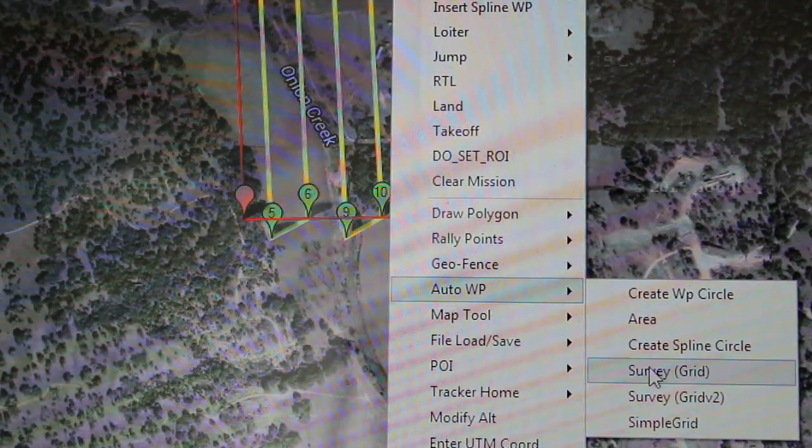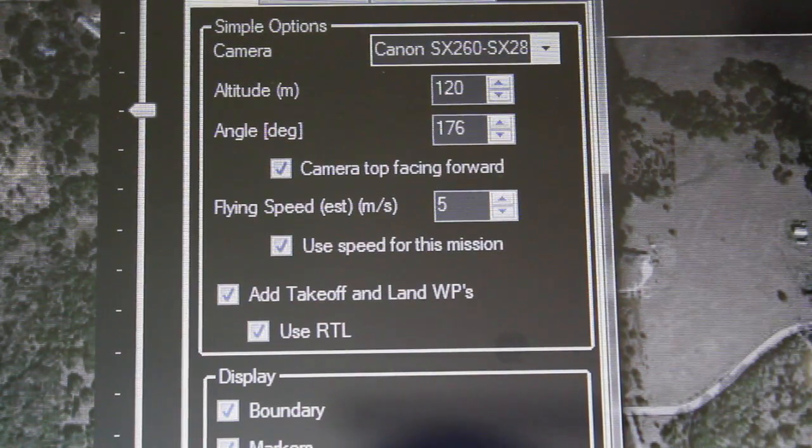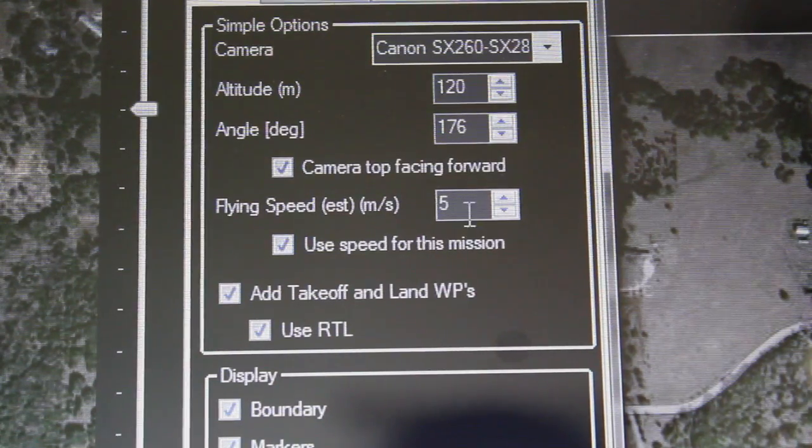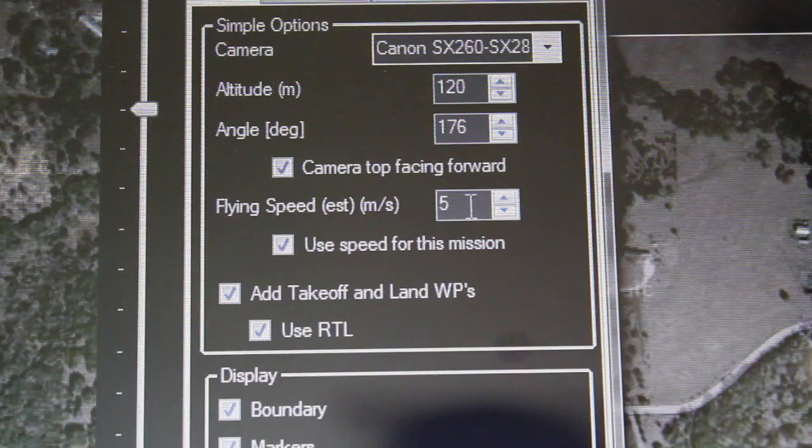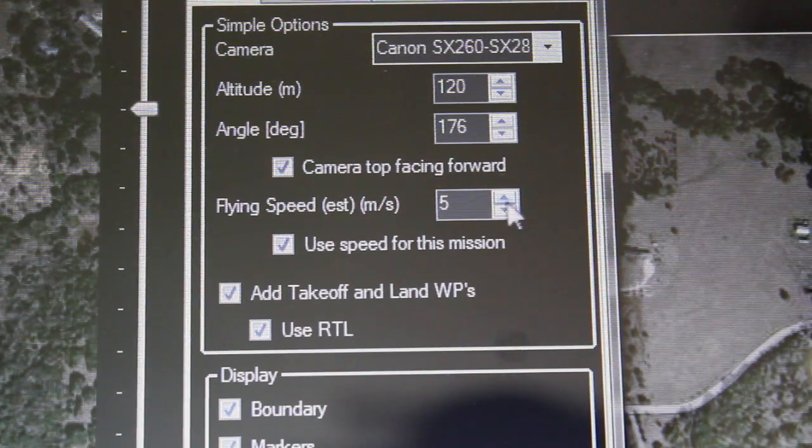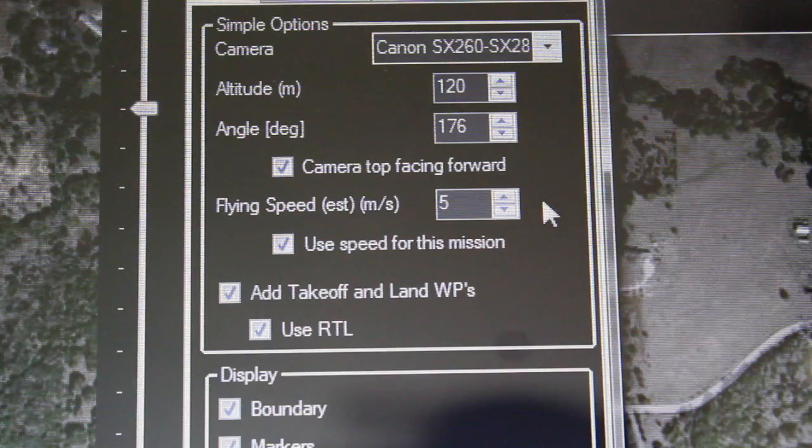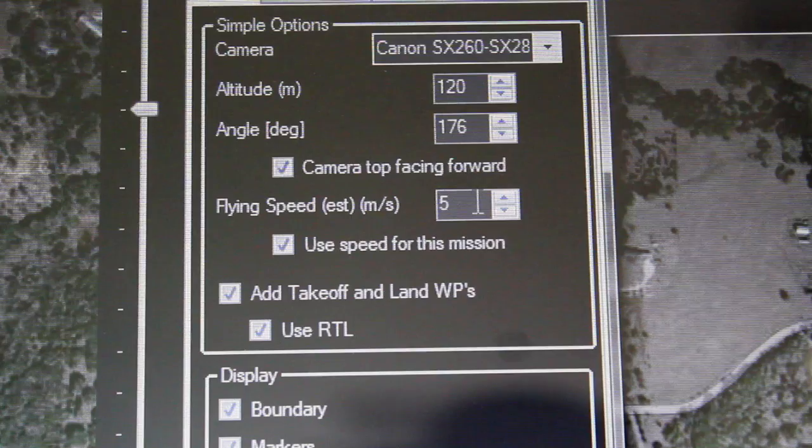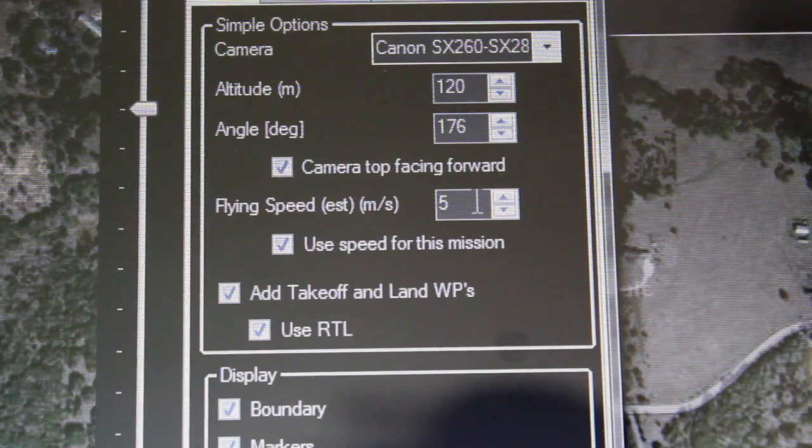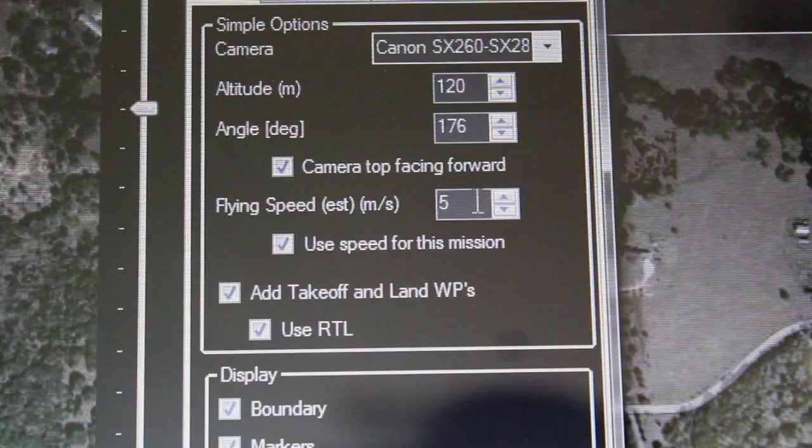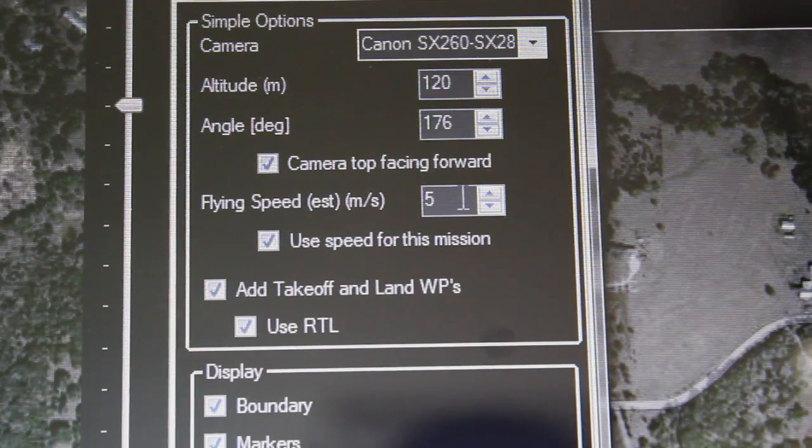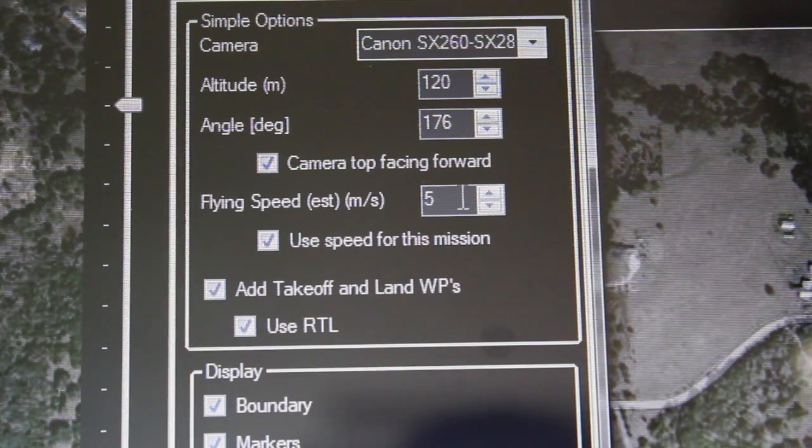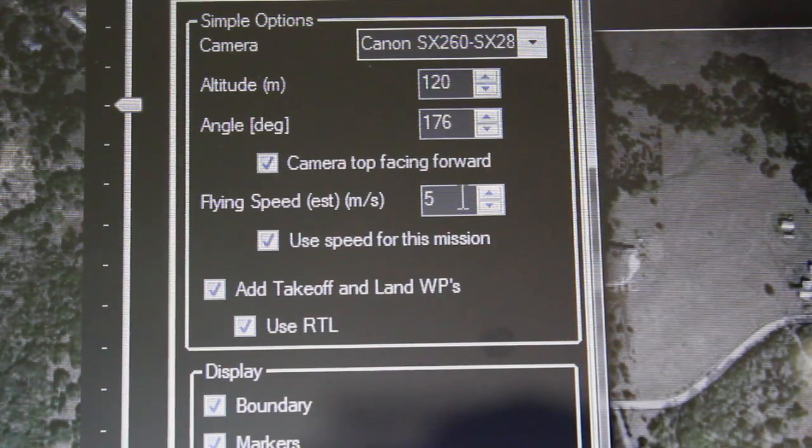Then I went to the survey grid again and if you check out the defaults, you'll notice that use speed for this mission is still checked, but the flying speed actually gets reset back to five. Now that's obviously not a big deal if you're flying a multi-rotor, but I was flying the Juggernaut wing. And what happened when it got to the first waypoint after auto takeoff, it reduced speed down to five meters a second. And since there was a considerable amount of wind that day, the Juggernaut and Pixhawk really couldn't handle that slow flying speed and ultimately turned upside down.